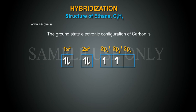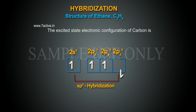The ground state electronic configuration of carbon 1s2, 2s2, 2p2. The excited state electronic configuration of carbon 2s1, 2p3.